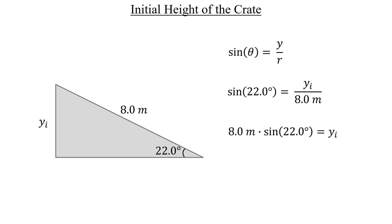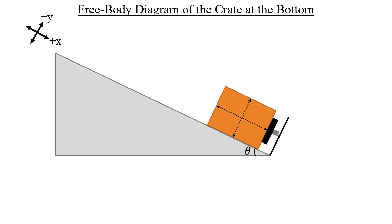Next up is the spring compression distance, and for that, we'll need a free body diagram. Here's our crate as it reaches the bottom of the ramp and comes to a stop. The forces acting on it will be its weight, the normal force from the ramp,